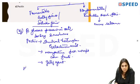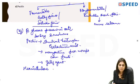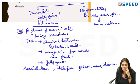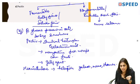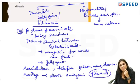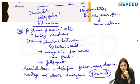Another soluble fiber is hemicellulose — a heteropolysaccharide made up of galactose, mannose, and rhamnose. It is present along with cellulose in the plant cell wall. Soluble fibers also include mucilage, produced by most plants and some microorganisms. Mucilage is present in flax seeds, which are known to help relieve constipation and aid in weight reduction due to their mucilage content.